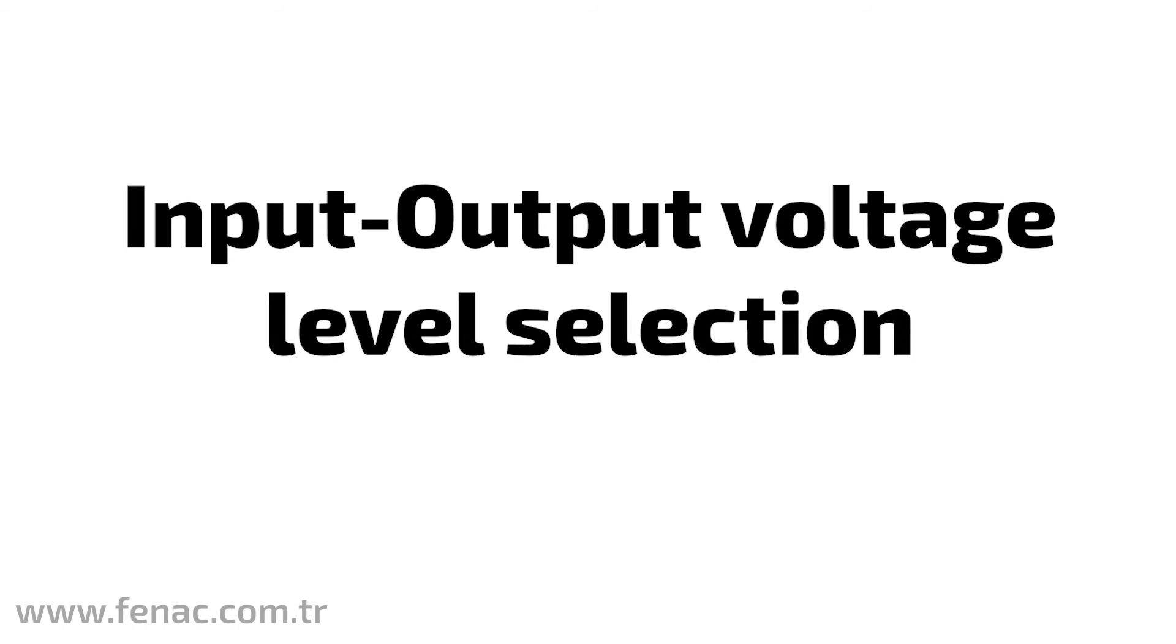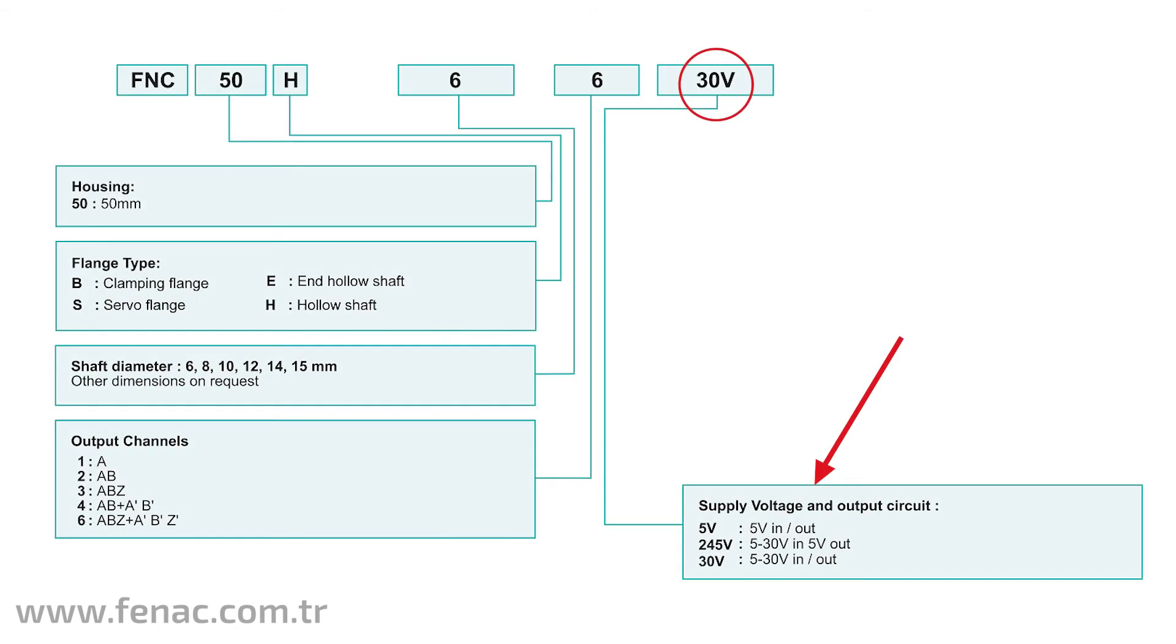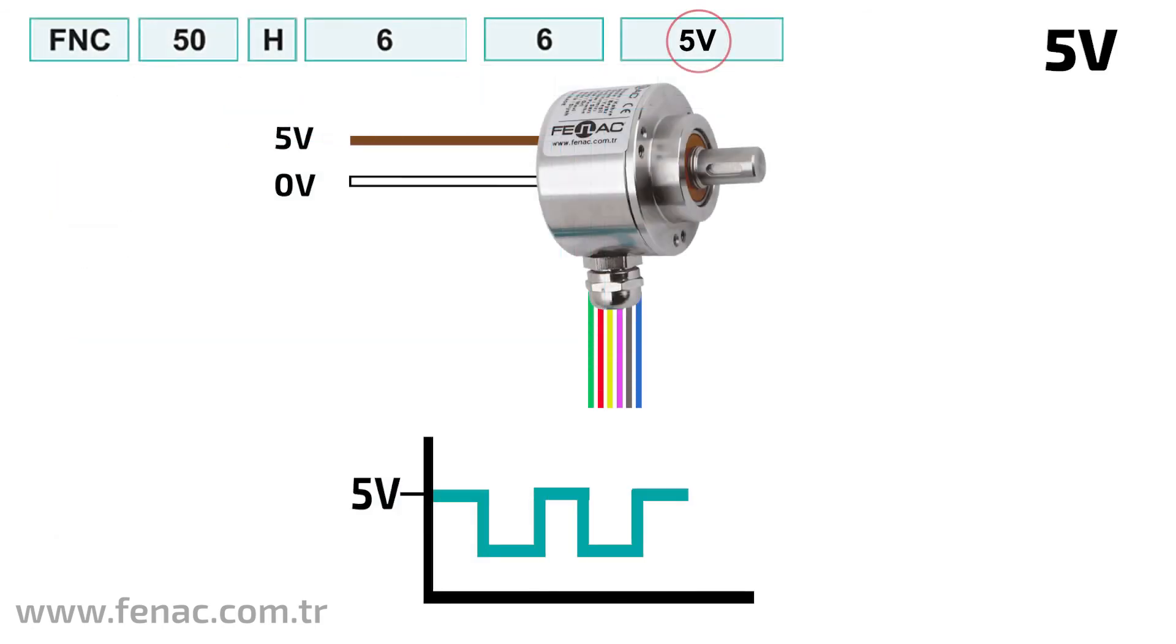Input-output voltage level selection: Depending on the application, the input supply voltage and the voltage level received at the output may vary. Selection should be made according to the desired voltage levels. For 5 VDC, supply voltage is plus 5 VDC, and output signals will again be at TTL plus 5 VDC level.